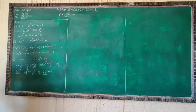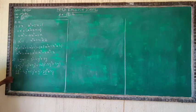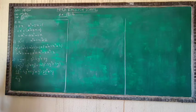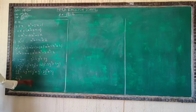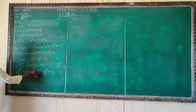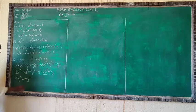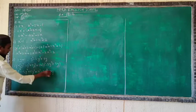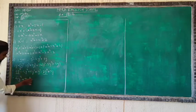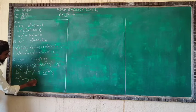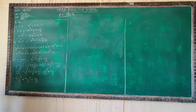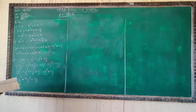The like terms cancel: 2y³ minus 2y³ gives 0. We have minus 4y⁴, and for y²: 6y² plus 1y² gives 7y². The remaining terms are 3y and -4y⁴. That is your answer. This question is completed.